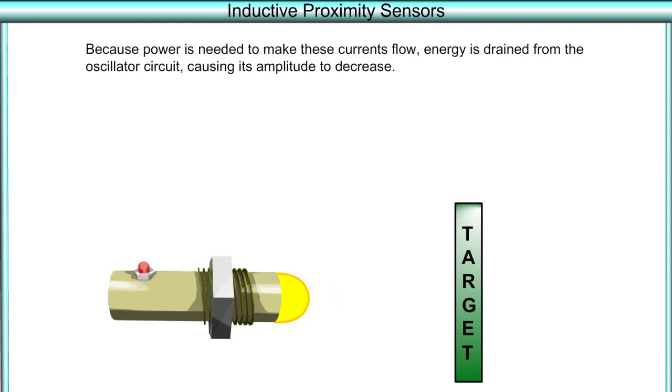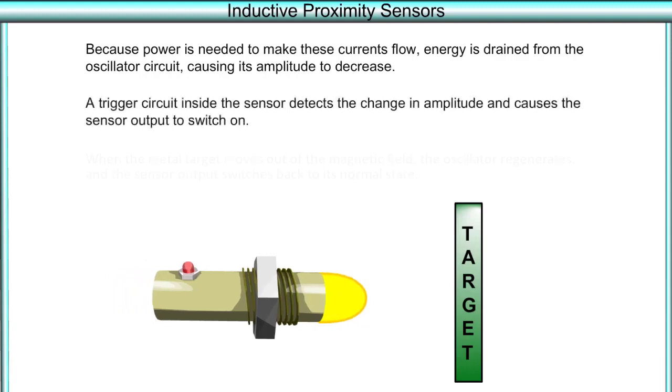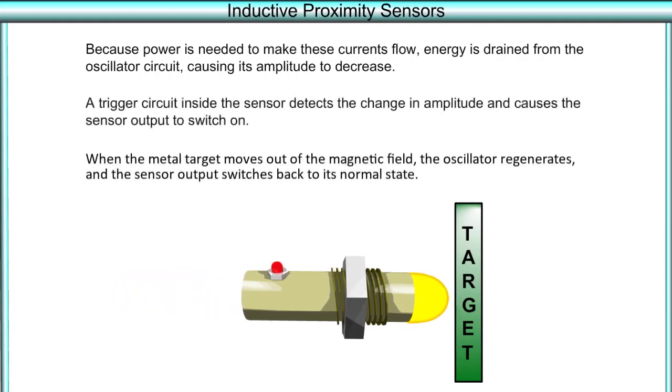Because power is needed to make these currents flow, energy is drained from the oscillator circuit causing its amplitude to decrease. A trigger circuit inside the sensor detects the change in amplitude and causes the sensor output to switch on.